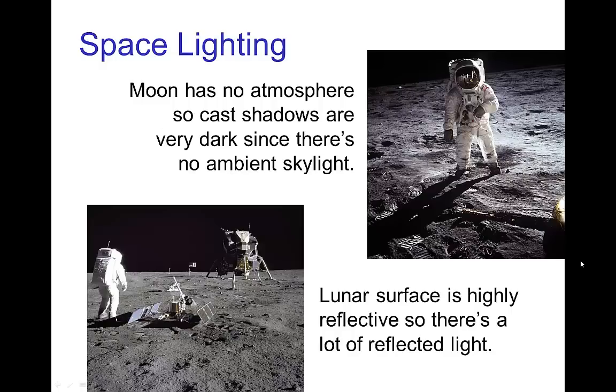Now, kind of an interesting situation with lighting is in space, and the distinction here is we don't have ambient light due to the atmosphere. So for example, these photos taken on the moon, because the moon has no atmosphere, the cast shadows are extremely dark, because there's no illumination from ambient skylight. Now there is a significant amount of reflected light, because the lunar surface in most parts of the moon is highly reflective. So you see a fair bit of reflected light on the lunar lander, even on the side which is not facing the sun.